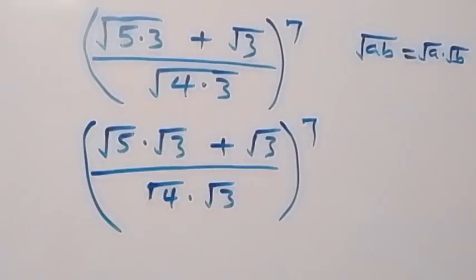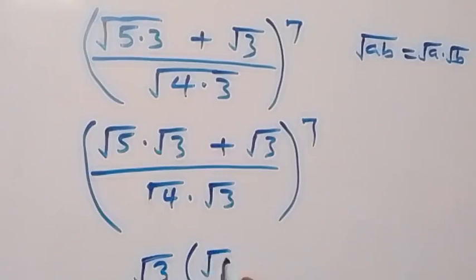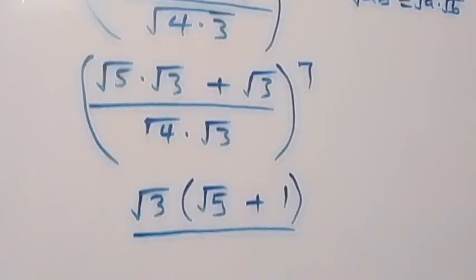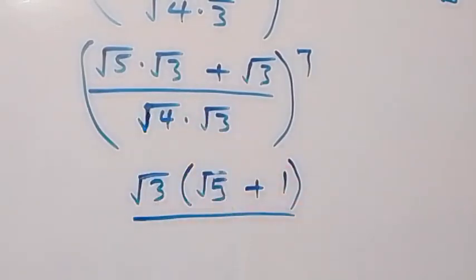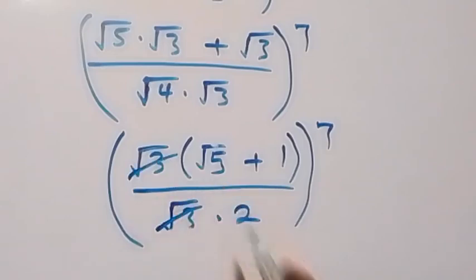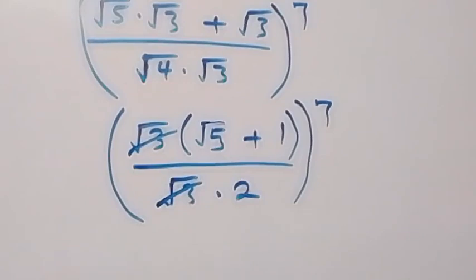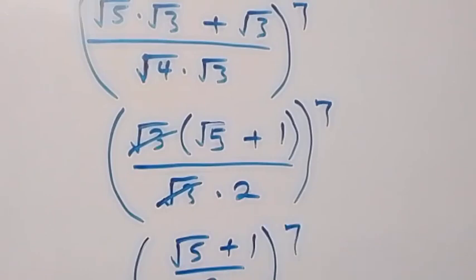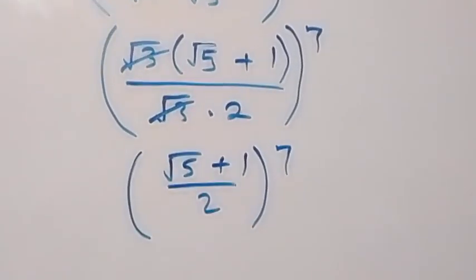We factor out root 3 from the numerator, leaving (root 5 plus 1). In the denominator, root 4 equals 2. So the root 3 cancels top and bottom, leaving us with (root 5 plus 1) over 2, raised to the power of 7.